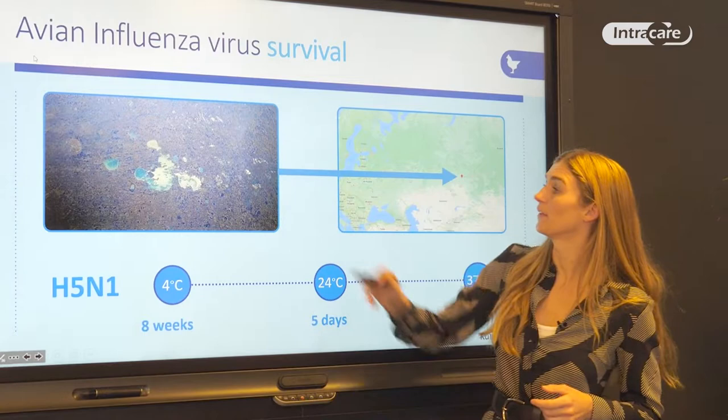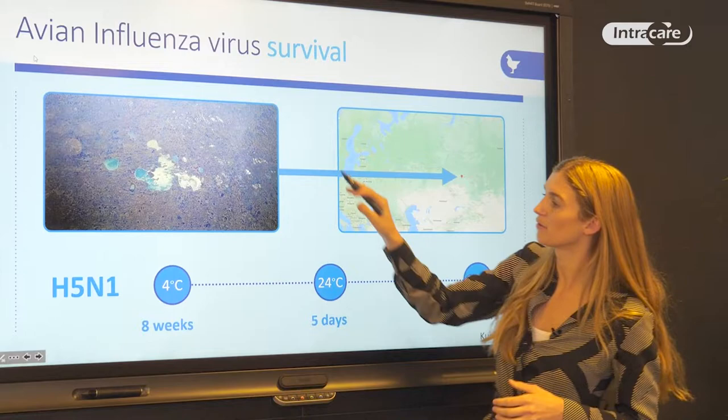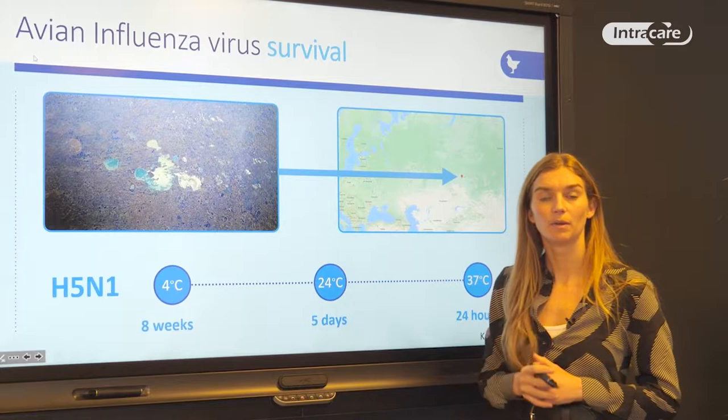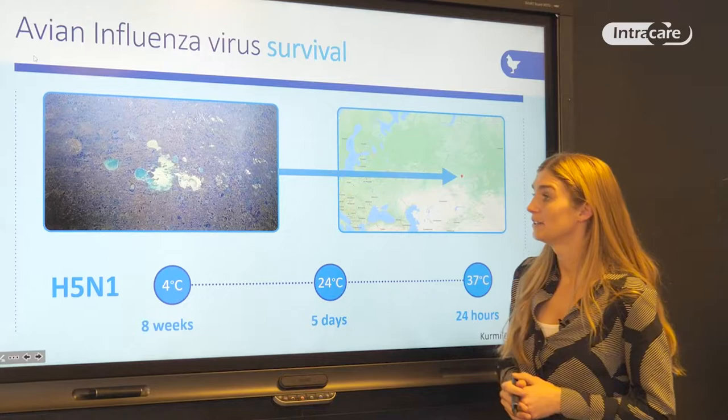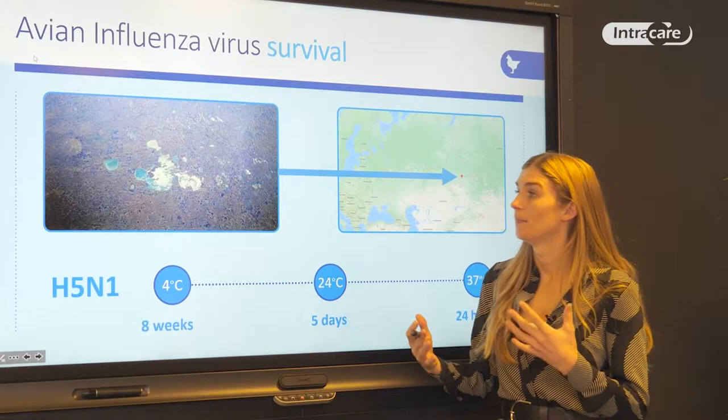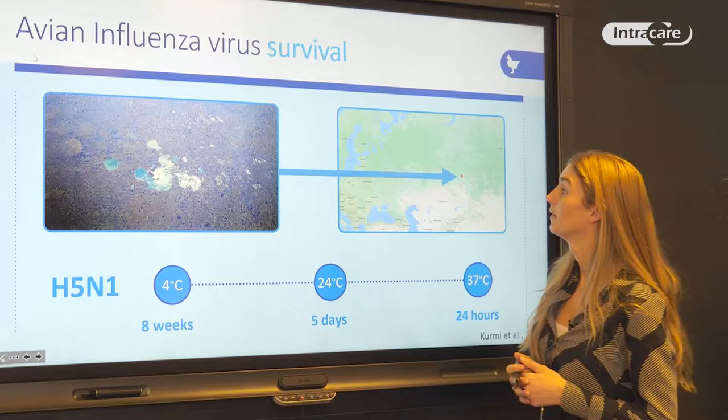The picture on the left is Lake Chani — a really common breeding zone for wild birds and therefore also a common breeding zone for avian influenza viruses. This picture is actually taken from space, showing how large this area is and the number of birds that can gather and potentially mix there. Looking at the timeline at the bottom, you can see how many days the virus remains active at different temperatures.